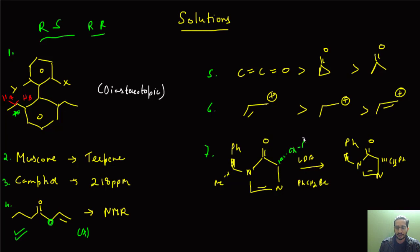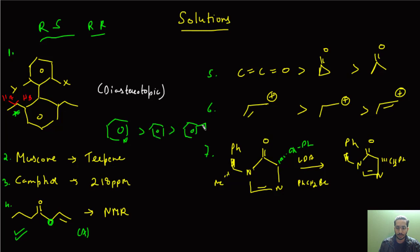There was also a question on decarboxylation that I forgot to write down but just remembered. The correct order of decarboxylation is: first pyridine, followed by benzene, and then the indole system. So pyridine undergoes decarboxylation fastest, then benzene, and then indole.